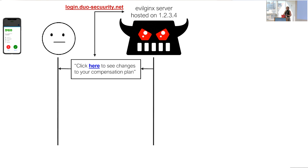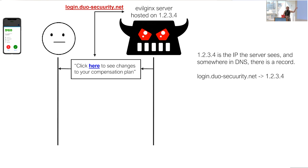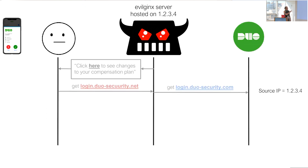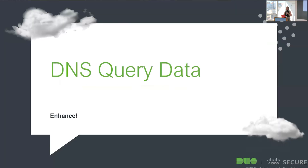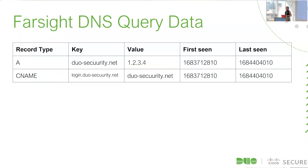To run the proxy server, the attacker has to host it somewhere, and to get you to visit it, they need a domain — which means there's a DNS record pointing to that attack server. The idea is: can we take authentications, look at the source IPs, see if they correlate with any phishing domains via reverse lookup, and then use that to gather signals about what these attacks look like in our data? Enter Farsight DNS query data — monthly and daily dumps of DNS records, both A records and CNAME records.